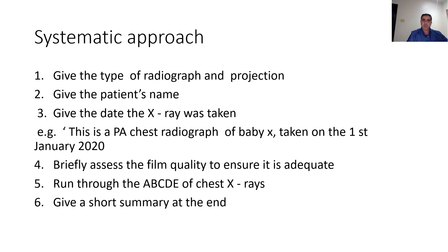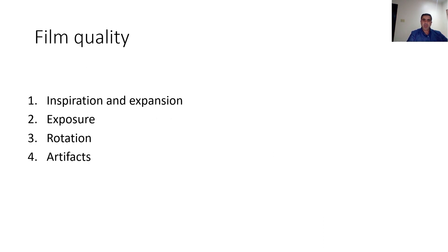The systematic approach includes six steps: first, state the type of radiograph and projection; then the patient's name; then the date the X-ray was taken — for example, 'This is a PA radiograph of Baby X taken on the first of January 2020.' Then briefly assess the film quality, which has four components we will mention. Then run the ABCDE of the chest X-ray, and finally give a short summary.